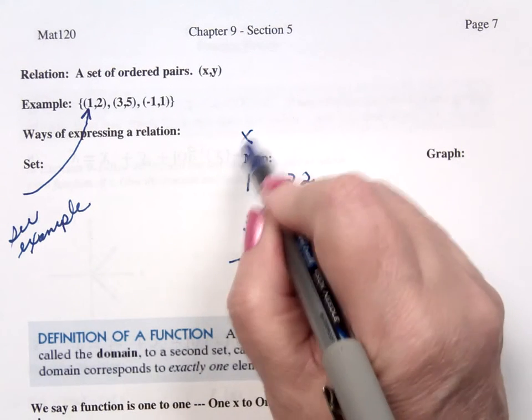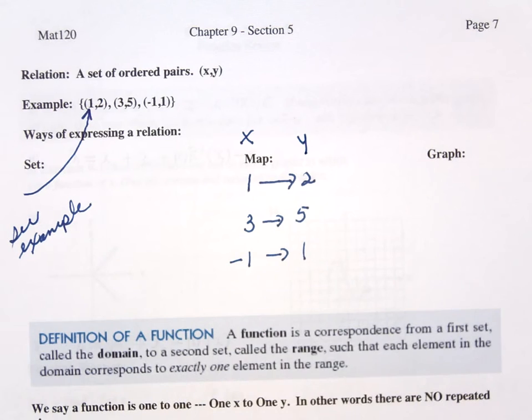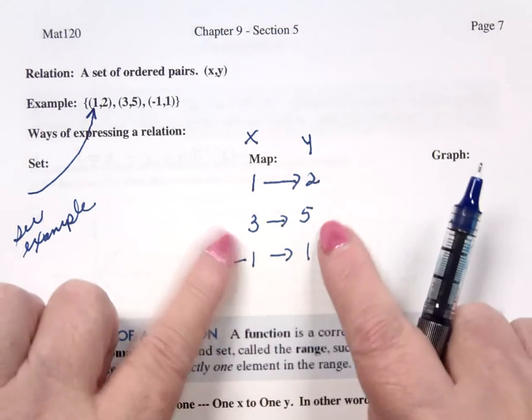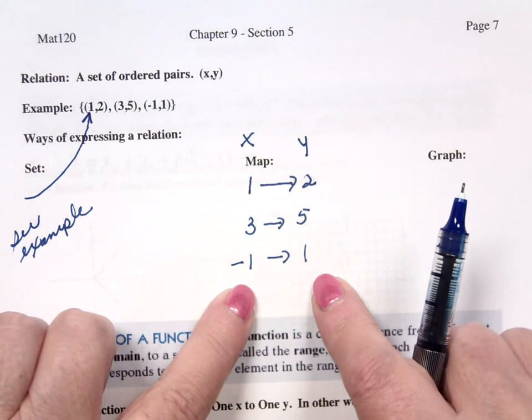I have my X's on my left and my Y's on my right. If I wanted to write them as coordinate points, I would say 1 comma 2, 3 comma 5, negative 1 comma 1.